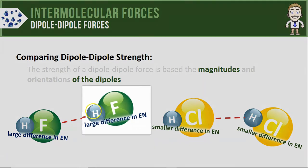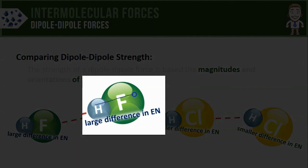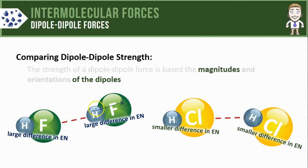And that means that the fluorine atom is going to pull on the shared electrons in this bond much more strongly than the chlorine atom will. So that fluorine is going to develop a partially negative charge with a greater magnitude than the chlorines will.